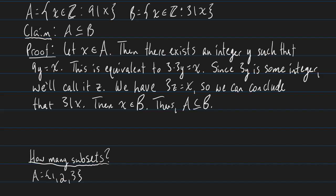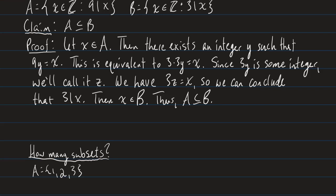Hopefully, if you actually tried it yourself, you got something along the same lines. Our proofs don't need to be word for word the same. If you didn't get it, don't feel bad — it's okay to get proofs wrong sometimes; that's how we learn. Now, the next thing I want to talk about is how many subsets of a set exist.